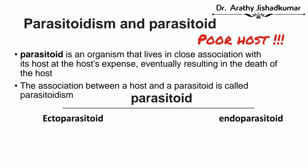The second category of feeding behavior is parasitoidism — a kind of relationship where the host will eventually die. Unlike parasitism, where the parasite doesn't kill the host, in parasitoidism the parasitoid eventually kills the host. Parasitoids can be of two kinds: ectoparasitoid, existing on the outer surface, and endoparasitoid, existing within the host.